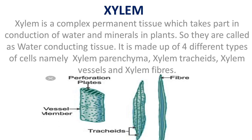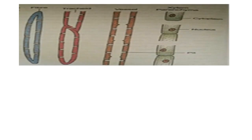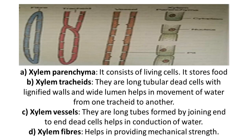You can see in the images xylem fibers, xylem tracheids, and xylem vessels. Xylem parenchyma stores food. Xylem tracheids are long tubular dead cells with lignified thick walls and a wide lumen, responsible for water movement. Xylem vessels are also long tubes joined end to end by dead cells and help in the conduction of water. Xylem fibers provide mechanical strength.